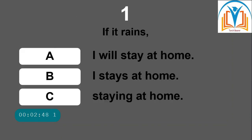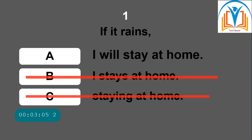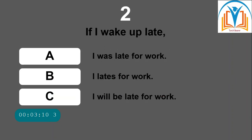Now a quiz for you. Question one: 'If it rains, what will happen?' Option A: I will stay at home. Option B: I stays at home. Option C: Staying at home. The answer is A — 'I will stay at home.' Question two: 'If I wake up late...' Option A: I was late for work. Option B: I late for work. Option C: I will be late for work. The answer is C — 'I will be late for work.'